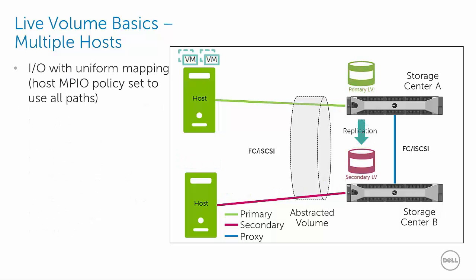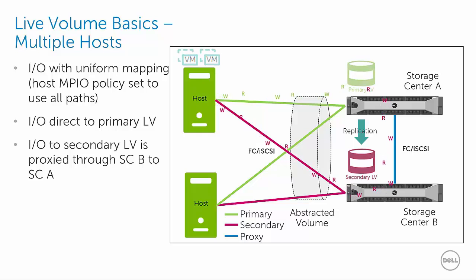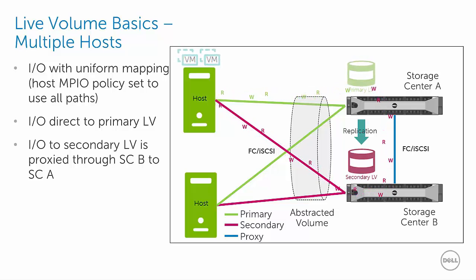Now let's take a look at how this behavior changes if we use uniform server mappings instead of non-uniform mappings. With uniform mappings, each host server is configured with data paths to both storage centers. The host with the workload can access the primary live volume directly, and can also access the primary live volume indirectly through additional data paths proxied through Storage Center B. We've configured the host servers to use MPIO with Round Robin, which distributes the I/O evenly over all available primary and secondary data paths. If permitting I/O over secondary data paths is not desired due to low bandwidth or high latency concerns, then either switch to non-uniform server mappings or use a different MPIO policy to control which paths are eligible for I/O. However, using an MPIO policy other than Round Robin can significantly increase administrative overhead and design complexity.